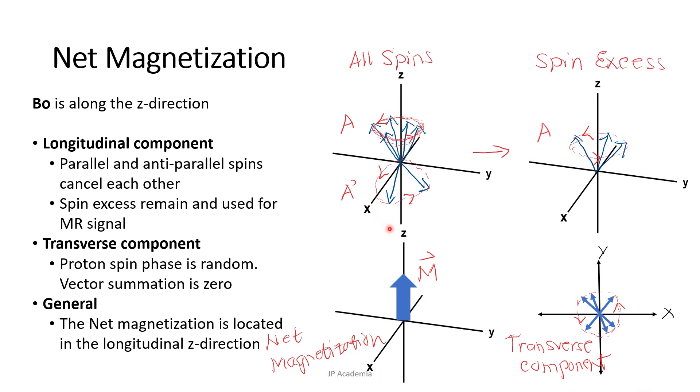In general, we end up with a magnetic vector in the direction of the external magnetic field or along the longitudinal Z direction. This is called the longitudinal magnetization. Thus, in a strong external magnetic field, a new magnetic vector is induced in the patient, who becomes a magnet himself or herself.